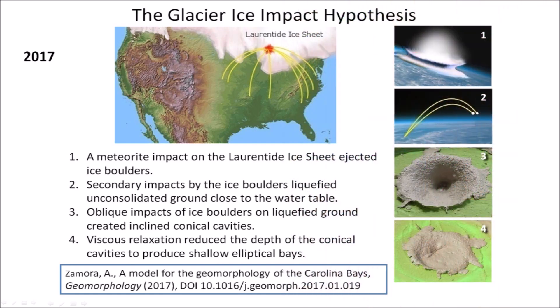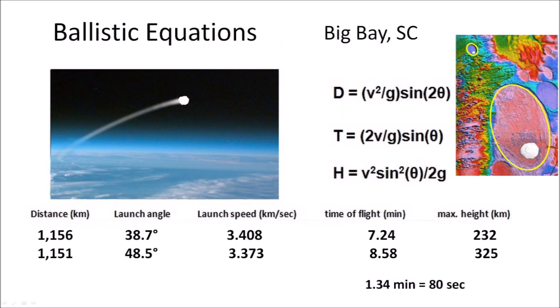Well-preserved Carolina Bays have a mathematically elliptical geometry and their orientations converge by the Great Lakes. The Glacier Ice Impact Hypothesis published in 2017 proposes that an extraterrestrial impact on the Laurentide Ice Sheet ejected pieces of glacier ice in ballistic trajectories, and the secondary impacts of the ice boulders liquefied the ground and created inclined conical cavities that transformed into shallow elliptical basins after viscous relaxation. The launch point of the ice projectiles that made Big Bay is about 1,156 km from the bay. From the width-to-length ratio of the bays, we can calculate the impact angles, and assuming the impact angles are the same as the launch angles, we can use ballistic equations to derive the launch speeds, the flight times, and the heights reached by the projectiles. Earth's atmosphere only extends to 100 km from the surface, so these trajectories are suborbital space flights in the vacuum of space.